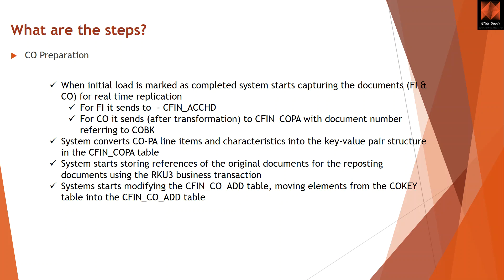For CO, after transformation, data is sent to the CFIN_COPA table with the document number referencing COBK. The CFIN_COPA table in the ECC system is updated after the initial load is marked complete in VCFIN_SOURCE_SET. The system converts COPA line items and characteristics into a key-value pair structure in the CFIN_COPA table. It also stores references and updates the CO_ADD table, which holds CO key table elements. These all happen behind the scenes during the CO preparation step.